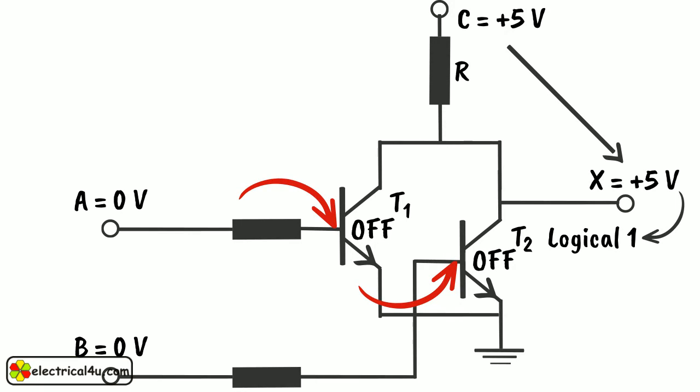Hence, in the circuit, the output is 1 only when both of the inputs are 0 and in all other conditions the output is 0.